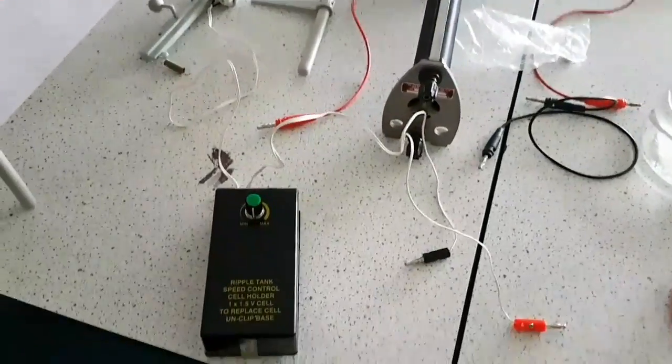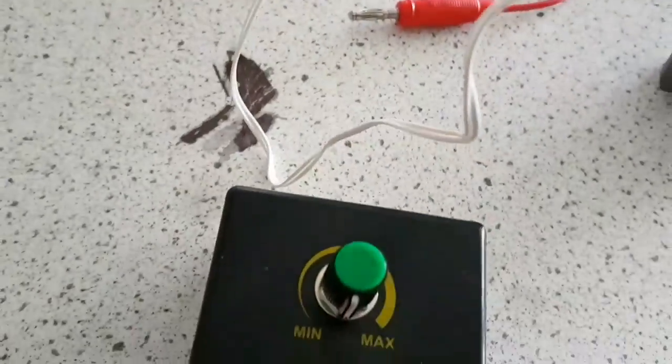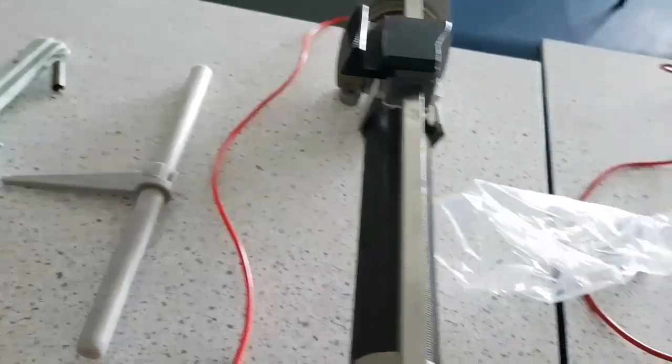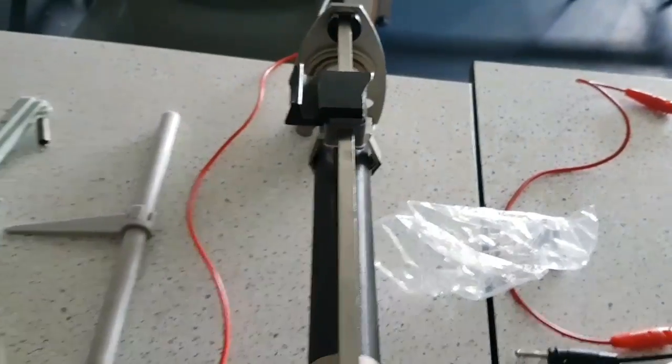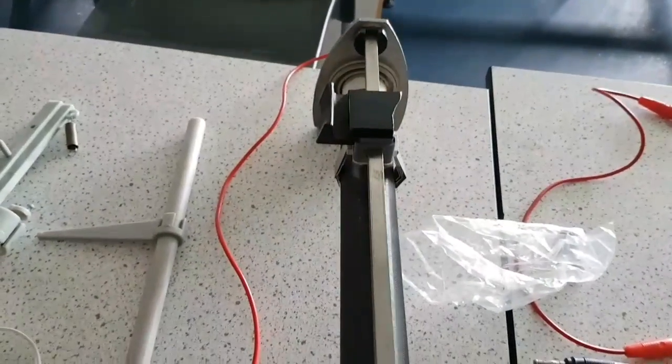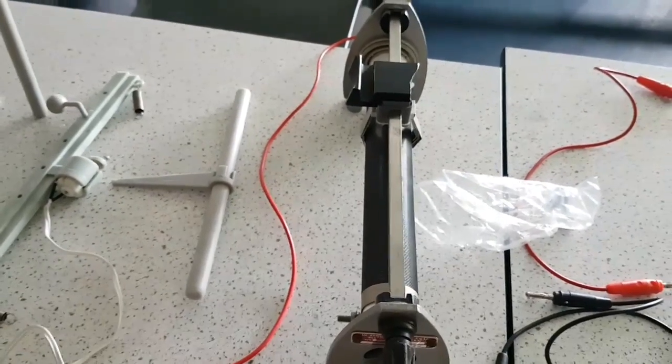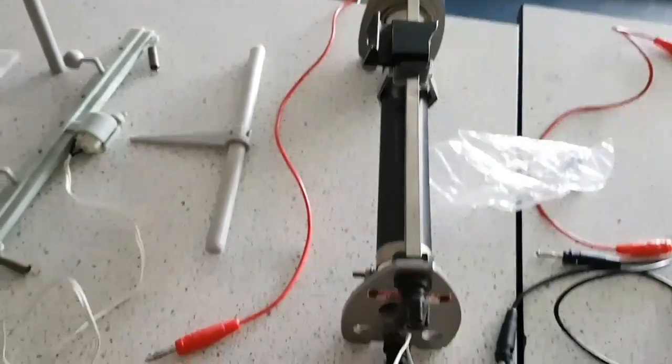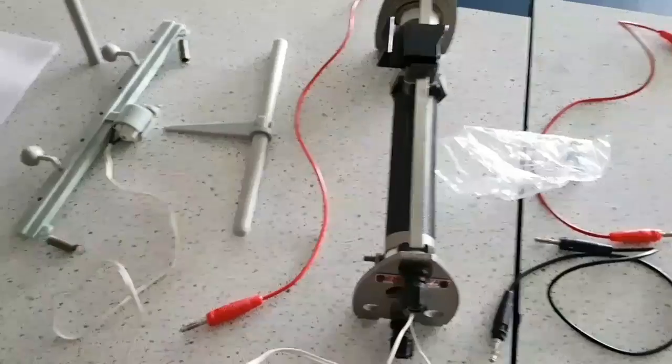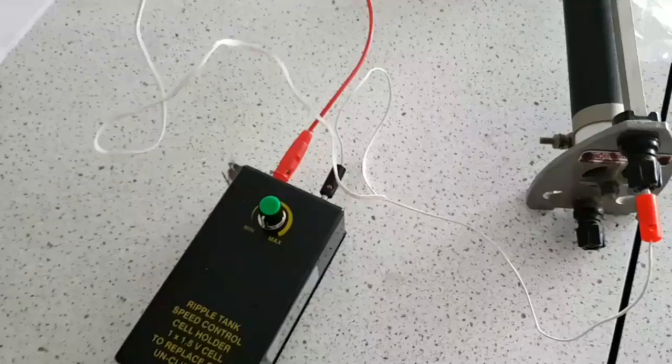Next, we'll be connecting up the power pack for the motor, which is directly connected to this motor here. It's going to be connected to the motor, and we're going to connect it up also to a rheostat, which controls the amount of current. It will increase or decrease the resistance, and therefore controls the amount of current that can flow through a circuit.